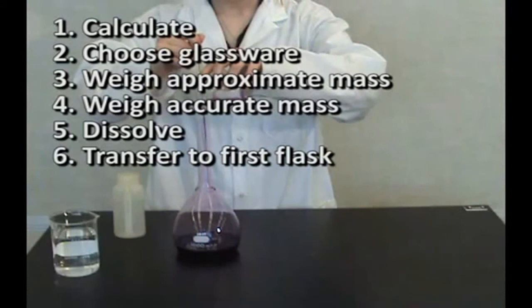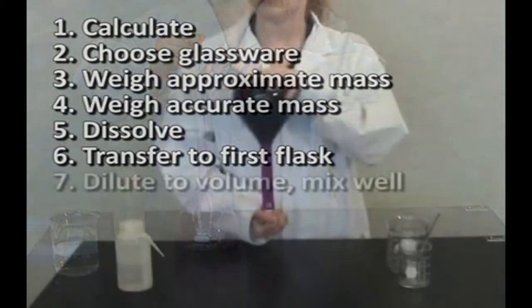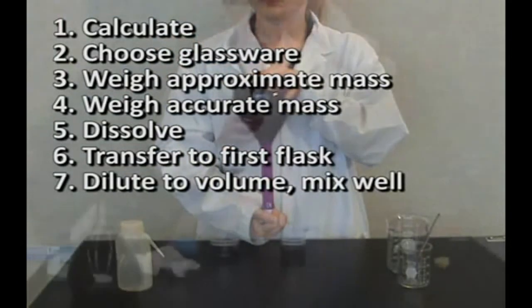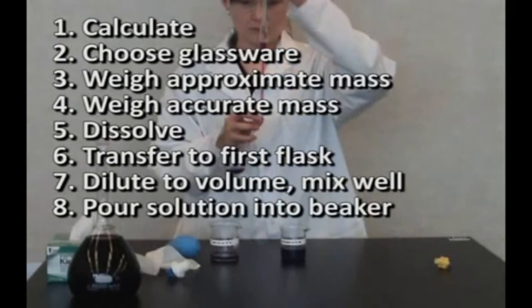Transfer to the first flask to be used in the dilution using the glass rod to pour. Dilute to volume, invert, and mix at least 15 times. Pour some solution into beaker.